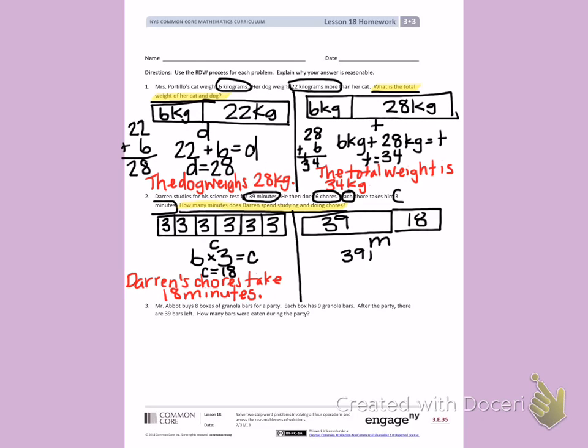To find my total, I'm going to add 39 minutes plus 18 minutes for my total minutes. Again, I will rewrite my problem up and down to help me solve. 9 plus 8 is 17. 3 plus 1 is 4. Plus 1 is 5. So M equals 57. Darren spends 57 minutes studying and doing chores.